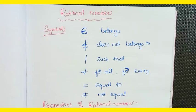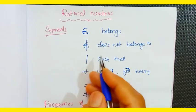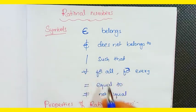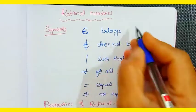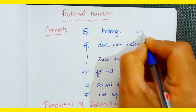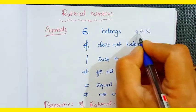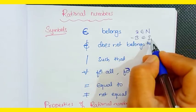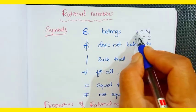Hello children, this is a rational numbers continuation video. We will discuss a few symbols in this video, then start the properties of rational numbers. This is the symbol for 'belongs to'. For example, 2 belongs to natural numbers, and -3 belongs to integers. Integers are negative and positive numbers.